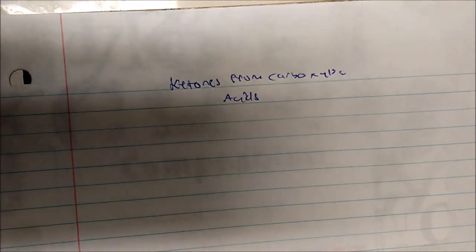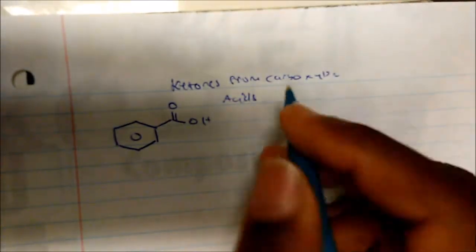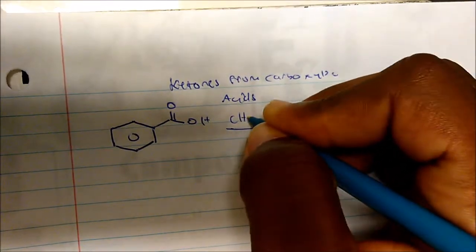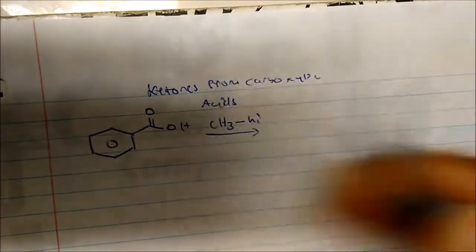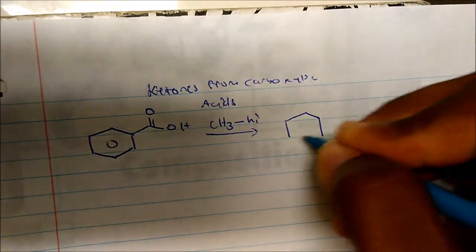In this video we're going to talk about getting ketones from carboxylic acids. The idea is that I'm going to use a simple carboxylic acid such as benzoic acid. So if I take benzoic acid and I add any sort of R-lithium, in this case I'm going to add CH3-methyllithium, I will get acetophenone.